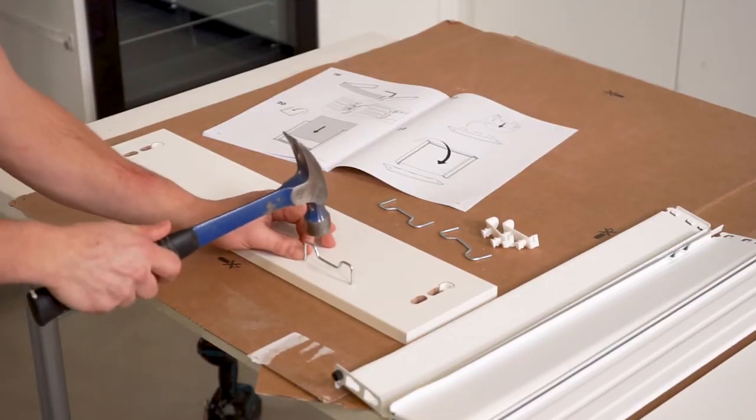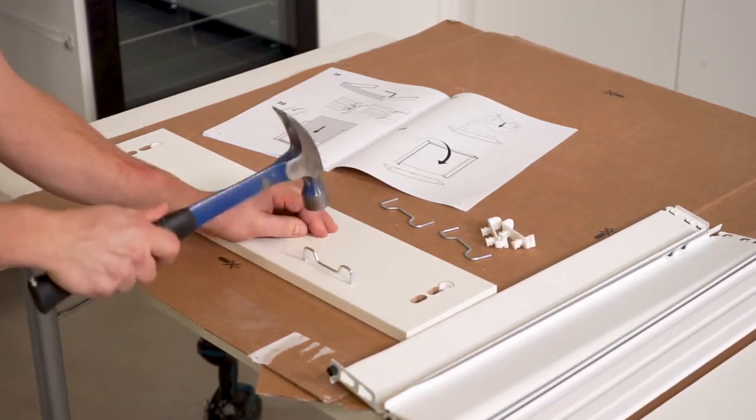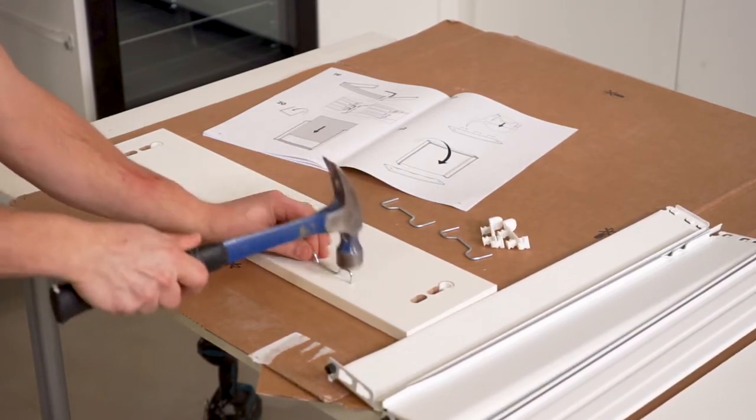There are two heights of drawer front to match the two heights of drawer. Attach the metal supports that come with the drawer using the pre-drilled holes.